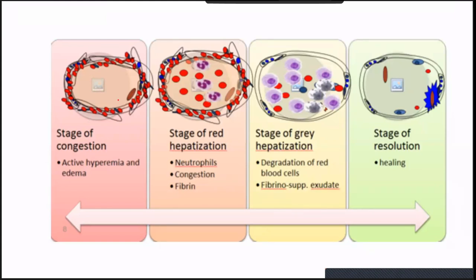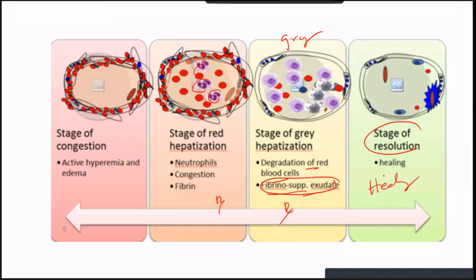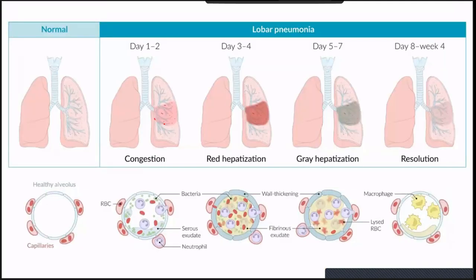This is a very good diagram of the four stages. You can see congestion (reddish), then red hepatization becoming more red, then grey hepatization, then normal. Very easy. Now, lobar pneumonia involves one lobe. Bronchopneumonia involves multiple lobules in a patchy pattern; primary involvement is the airways and surrounding interstitium. The organism in lobar pneumonia was pneumococcus; in bronchopneumonia it is Staphylococcus aureus — MCQ. The whole lung appears hazy.